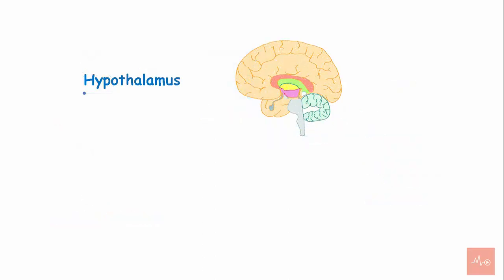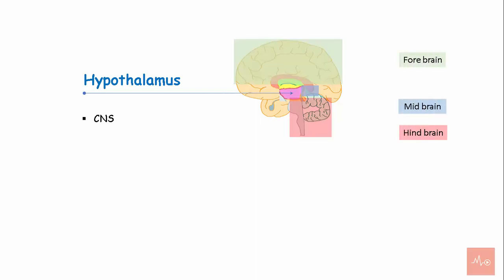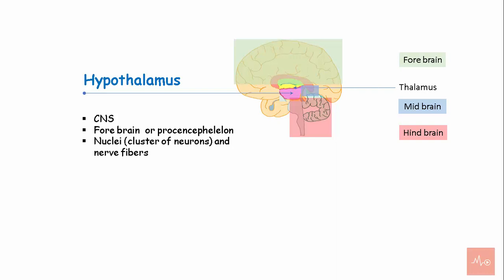The hypothalamus belongs to the central nervous system and is part of the forebrain, or the prosencephalon. It is located below the thalamus and is composed of nuclei and nerve fibers.